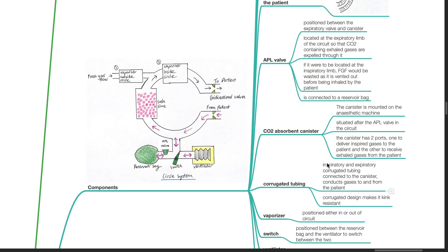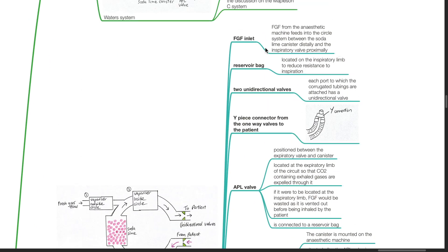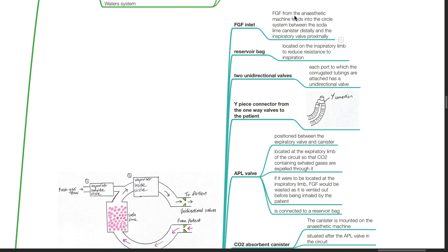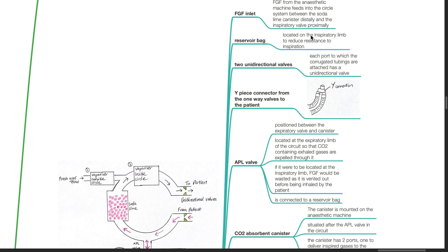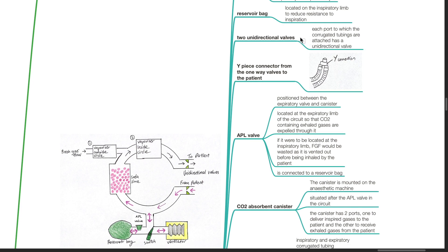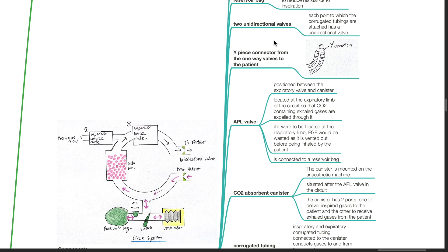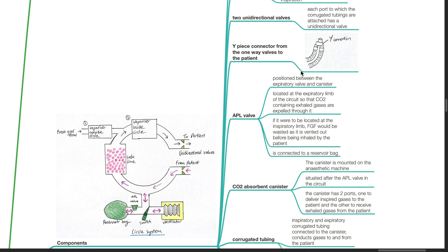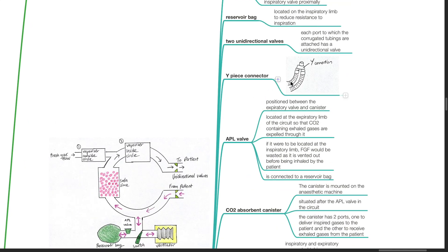Components of the circle system. A fresh gas flow inlet: fresh gas flow from the anesthetic machine feeds into the circle system between the soda-lime canister distally and the inspiratory valve proximally. The reservoir bag is located on the inspiratory limb to reduce resistance to inspiration. Two unidirectional valves: each port to which the corrugated tubings are attached has a unidirectional valve. The Y-piece connector connects the tubes distally.